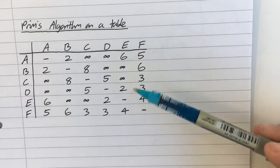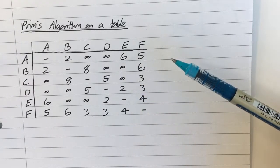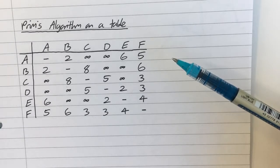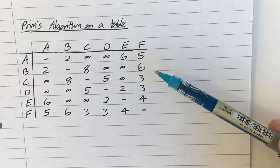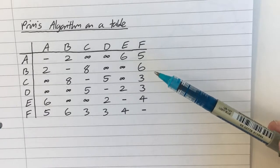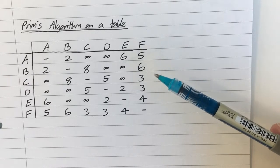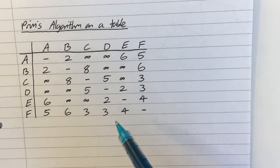You can go from table to network, you can go from network to table. But if the information is given to you as a table, it's just a bit of extra effort to draw the network out and then perform Prim's, because actually you can perform Prim's directly onto the table.